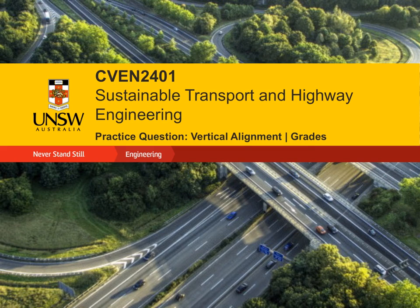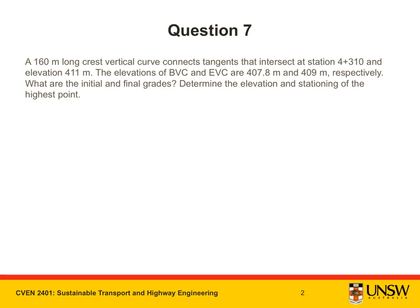In this video we will do a practice question on vertical alignment, specifically on grades. The question: a 160 meter long crest vertical curve connects tangents that intersect at station 4+310 and elevation 411 meters. The elevations of BVC and EVC are 407.8 meters and 409 meters respectively. What are the initial and final grades, and determine the elevation and stationing of the highest point?